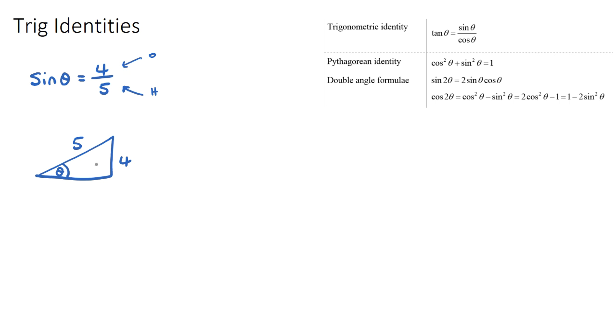Now what a common IB exam question then asks is to find cos θ, and we can find cos θ by using the Pythagorean identity. This is one of the trig identities. Now I'll use the formula and then I'll show you why it makes sense. So if we just apply this formula here, this formula says well cos²θ + sin²θ is equal to 1. I know sin θ is 4/5, I just don't know cos θ, so I'll write cos²θ